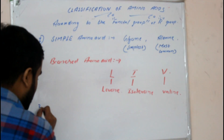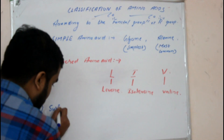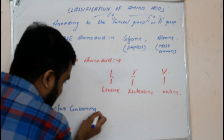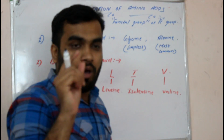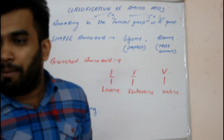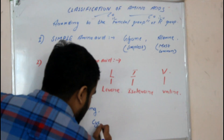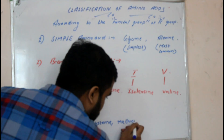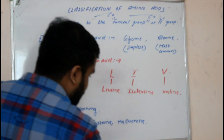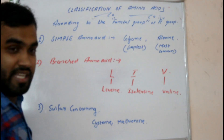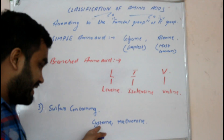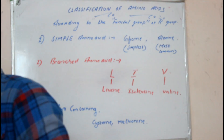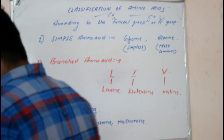The third group is sulphur-containing amino acids. Sulphur-containing amino acids include two amino acids: cysteine and methionine.